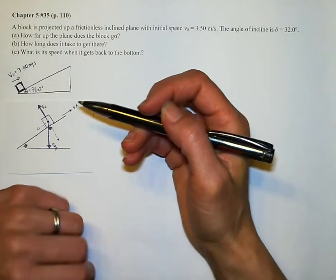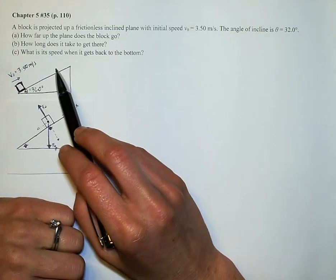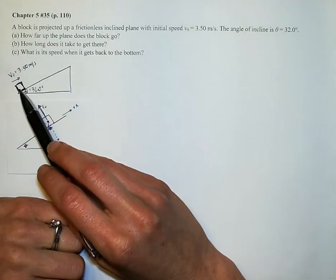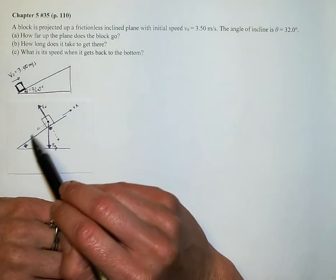This is problem number 35 from chapter 5. In it, a block is projected at a frictionless inclined plane with initial speed of 3.5 meters per second. The angle of incline is 32 degrees. How far up the plane does the block go?